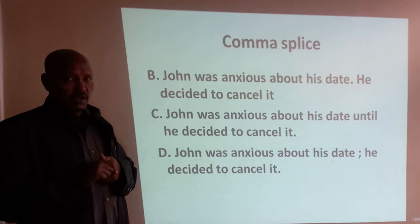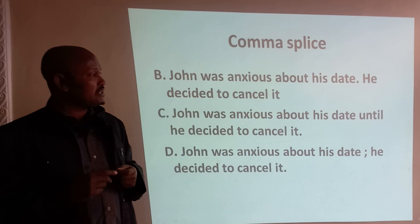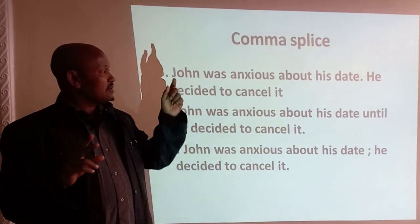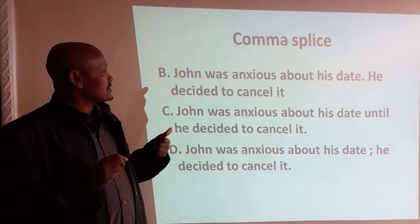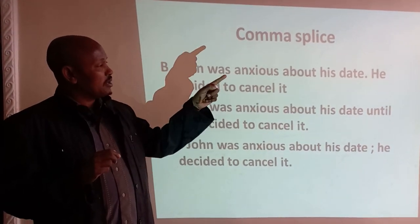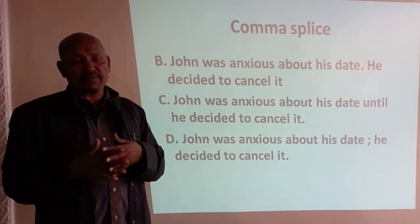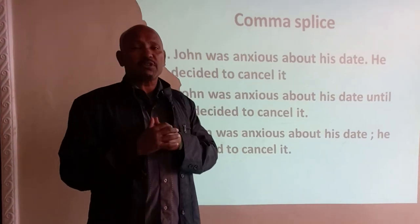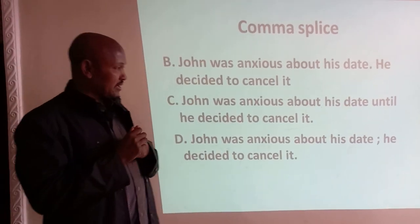The second way to correct comma splice is to use a period. 'John was anxious about his death. He decided to cancel it.' After the end of the first sentence, we put a period, and the second sentence begins with a capital letter. So instead of using a comma, we place a period at the end of the first sentence — that is the second way of correcting comma splice.